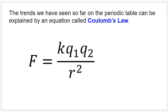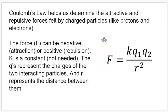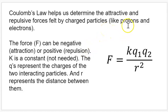But we haven't really explained why these trends are the way they are. A lot of it can be explained by an equation called Coulomb's Law. Coulomb's Law helps us determine the attractive and repulsive forces felt by charged particles, like the protons and the electrons. The force acting between two particles, represented by F, can be either positive or negative. A negative force results in a force of attraction between particles, and a positive force is a force of repulsion between particles. We can already predict where this is going if we think about what the charges of protons and electrons are.